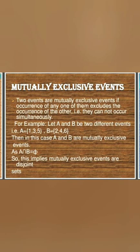Next, mutually exclusive events: if two events cannot occur simultaneously, they are called mutually exclusive events. For example, if you throw a die, let event A be getting odd numbers — 1, 3, or 5 — and event B be getting even numbers — 2, 4, or 6. Event A and event B cannot occur simultaneously, so they are called mutually exclusive events. I hope what I have explained in this video is quite useful and you have understood. Thank you.